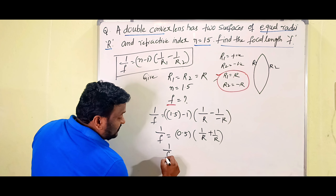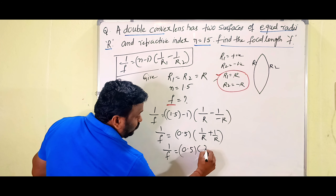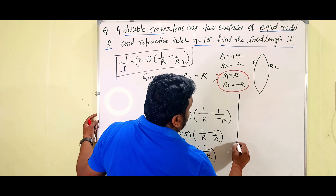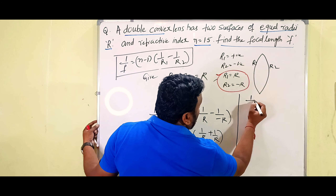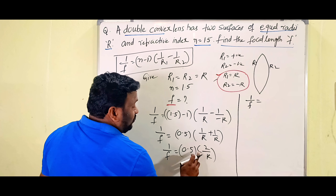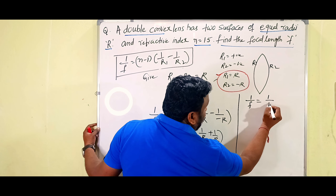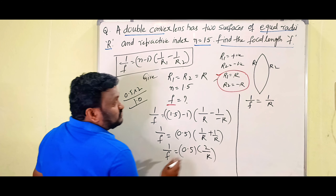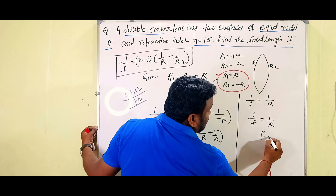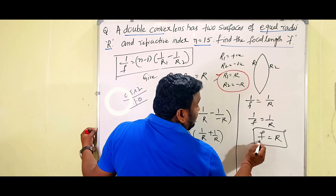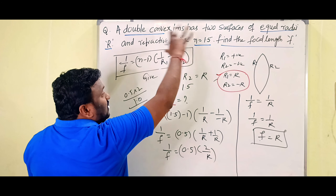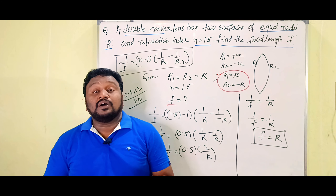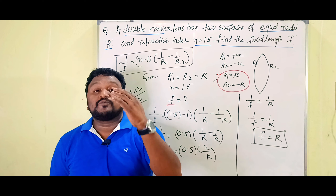So 1/f = 0.5 × 2/r = 1/r, which gives f = r. Therefore, the focal length is equal to the radius of curvature r. If you found this helpful, please like, share, comment, and suggest our channel to your friends. Thank you.